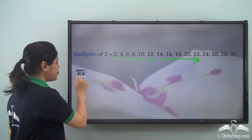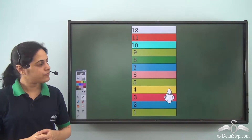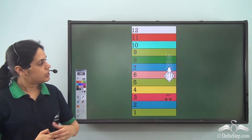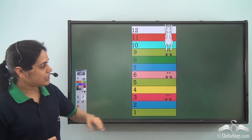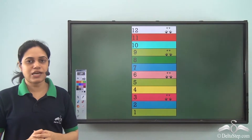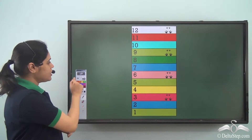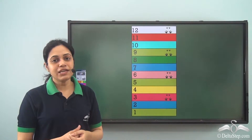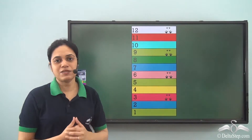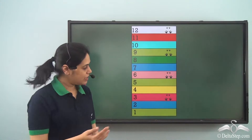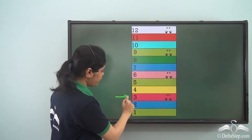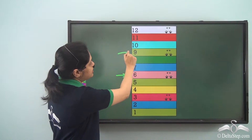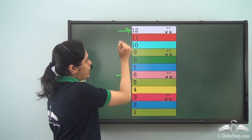Now in the park there also lived a rabbit, and the rabbit was also hopping on the track. See how he is hopping? He is taking three steps at a time. So we can find the marks of the rabbit on track number 3, track number 6, 9 and 12.